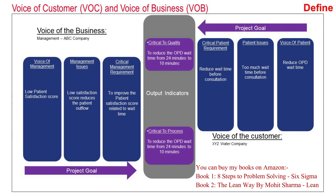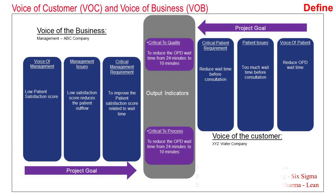The voice of the management was low patient satisfaction score. The issue of the management was that low satisfaction score reduces patient outflow, and the critical management requirement was to improve the patient satisfaction score, which was related to the wait time. Critical to process, which is CTP, was to reduce the OPD wait time from 24 minutes to 10 minutes.